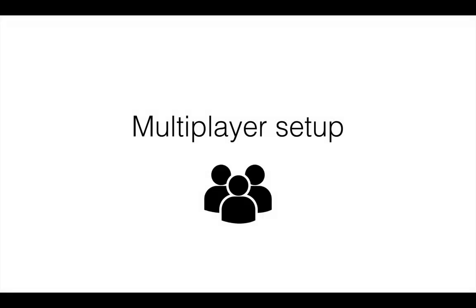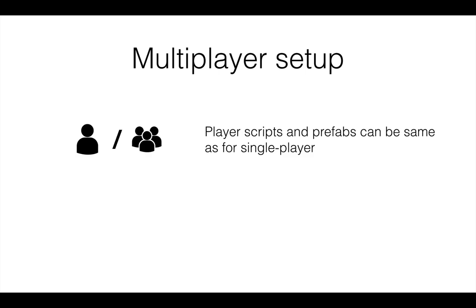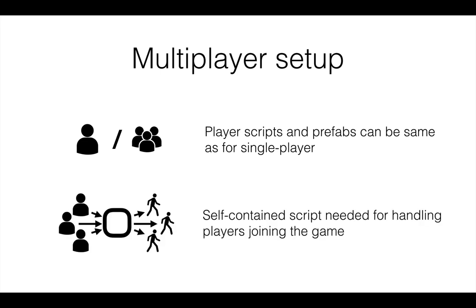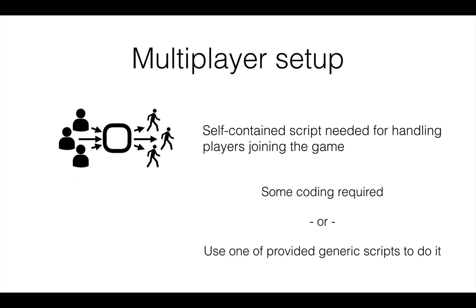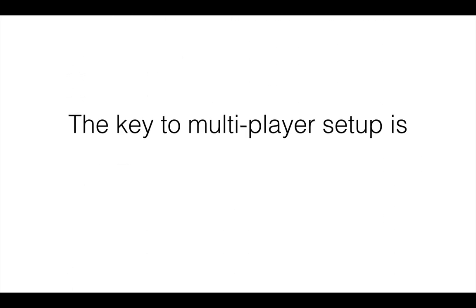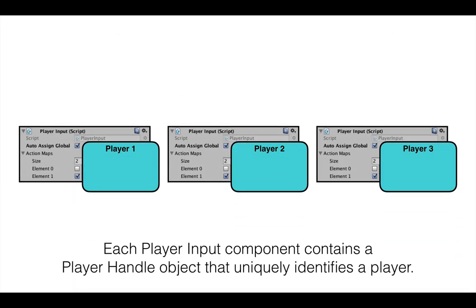Now let's look at multiplayer setup. Player scripts and prefabs can be the same in a multiplayer setup as they are for single player. We just need a self-contained script for handling players that want to join the game — either some custom code or one of a provided set of generic scripts. The key to multiplayer setup is something called player handles. Each player input component contains a player handle object that uniquely identifies a player — and by player I mean the person playing, not the player avatar.